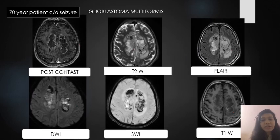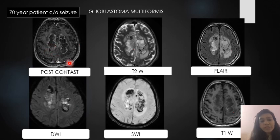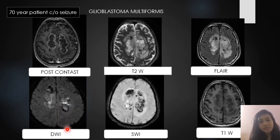The next case is glioblastoma multiforme. This is a 70-year-old patient complaining of seizure showing ring and incomplete irregular ring enhancing lesions in bilateral cerebral hemispheres with surrounding perilesional edema, showing mild restriction on DWI. This is most likely a neoplastic lesion — high-grade glioblastoma.